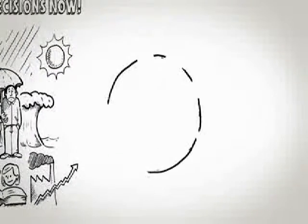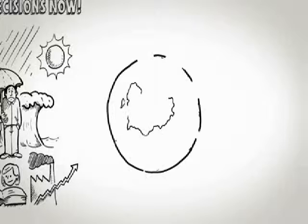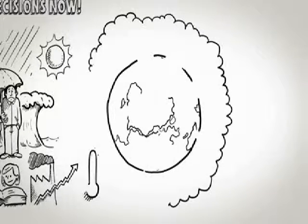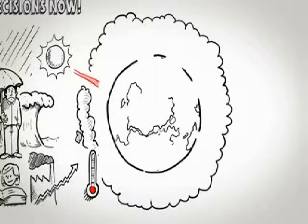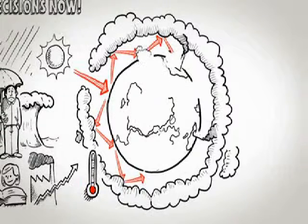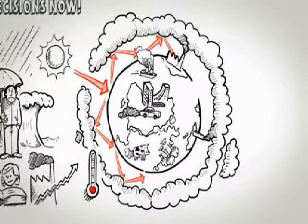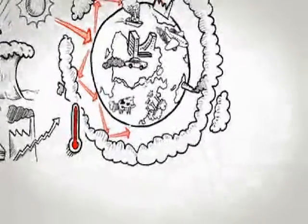The climate has always been changing, but the recent change caused by our emission of gases such as carbon dioxide and methane has increased the greenhouse effect of the atmosphere. That's happened in a much shorter time frame. As a result, the Earth is warming.